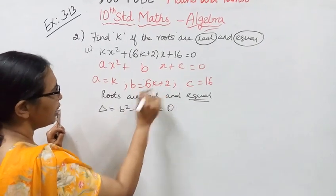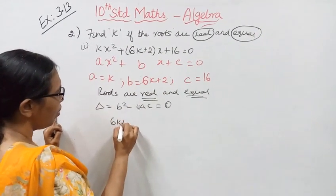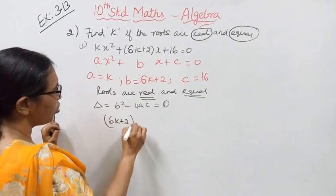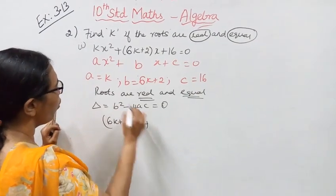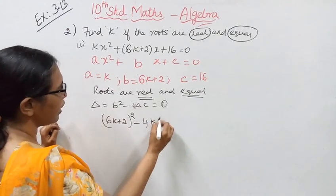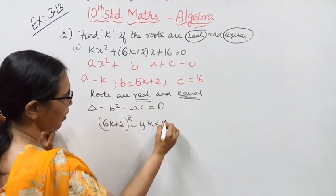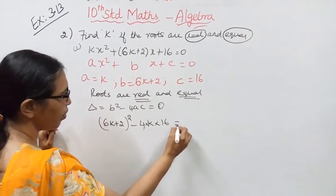Substituting the values: b is 6k plus 2, so (6k+2)² minus 4 times a which is k, times c which is 16, equal to 0.